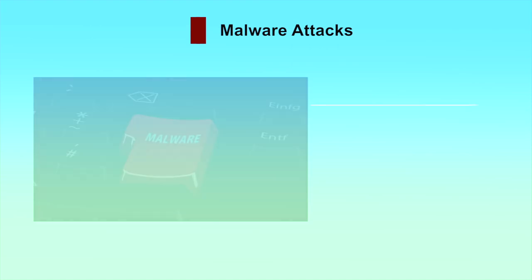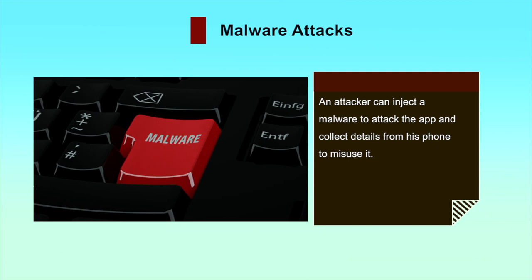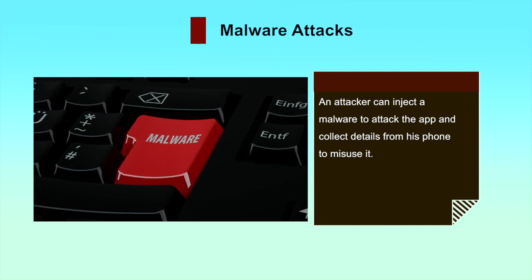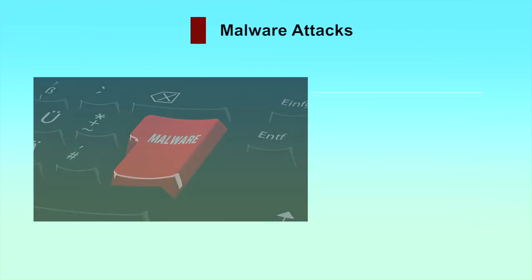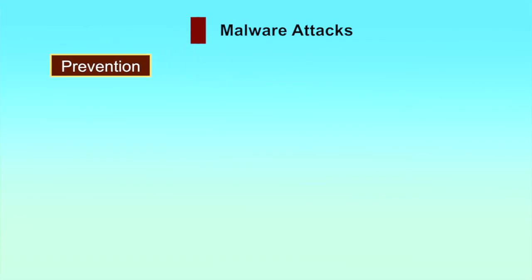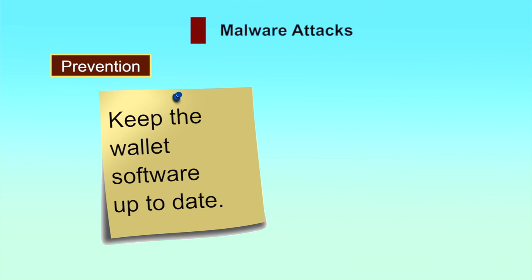The third threat to e-wallets is malware attack. Malware attacks on apps have threatened the safety of users' money. An attacker can inject malware to attack the app and collect details from the phone to misuse it. To prevent against malware attacks, keep the wallet software up to date. Using the latest version of the software allows receiving important stability and security fixes timely. Updates can prevent problems of various degrees, include new useful features and help keep the wallet safe.